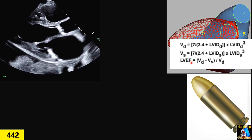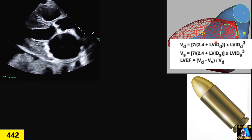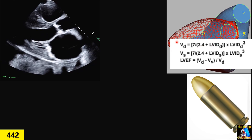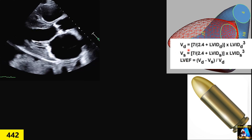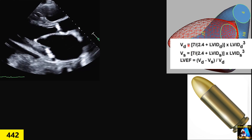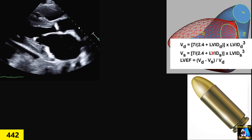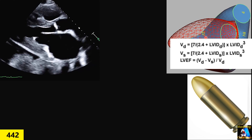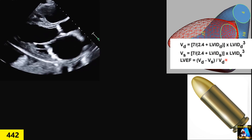We measure LVID at diastole and the machine calculates left ventricular volume at diastole. Then when we measure LVID at systole, it calculates the left ventricular volume at systole, and finally by formula it gives us the ejection fraction. This technique assumes the left ventricle is cone-shaped, or more accurately bullet-shaped. Only in that situation will this formula and technique be reliable.